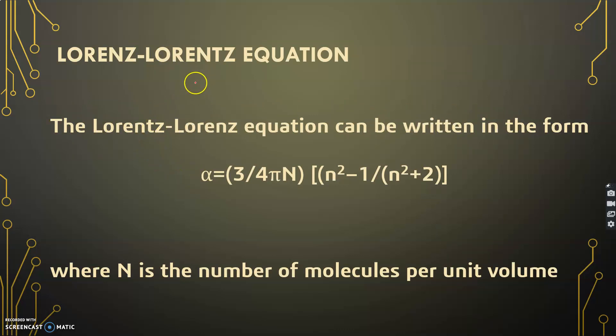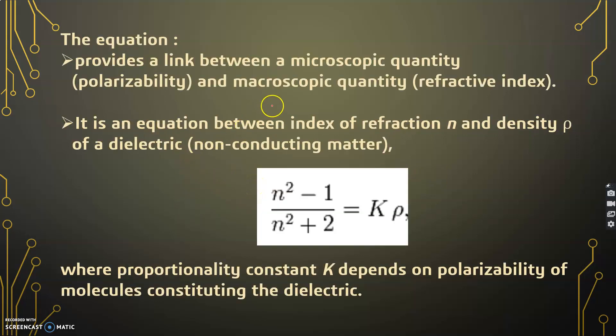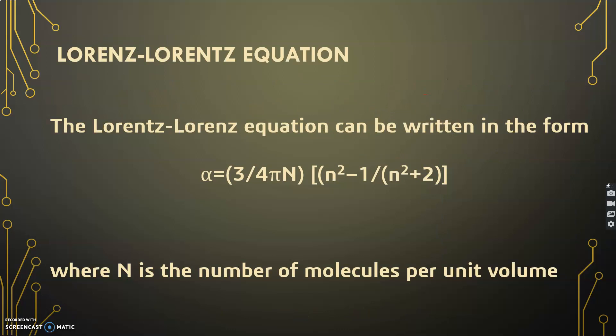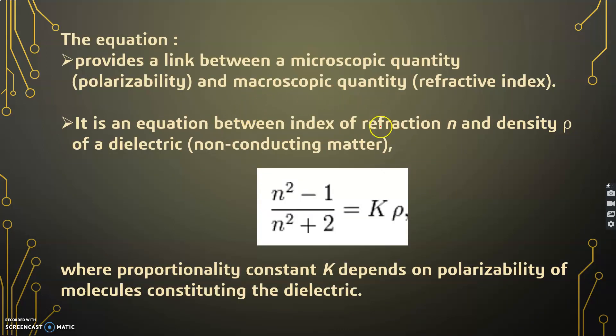The Lorentz-Lorenz equation can be written in the form as given here. It is very similar to Clausius-Mossotti equation, but the only difference is when the Clausius-Mossotti equation links polarizability and dielectric constant, the Lorentz-Lorenz equation relates the refractive index and the microscopic quantity polarizability. Here refractive index is the macroscopic quantity and the microscopic quantity is the polarizability.